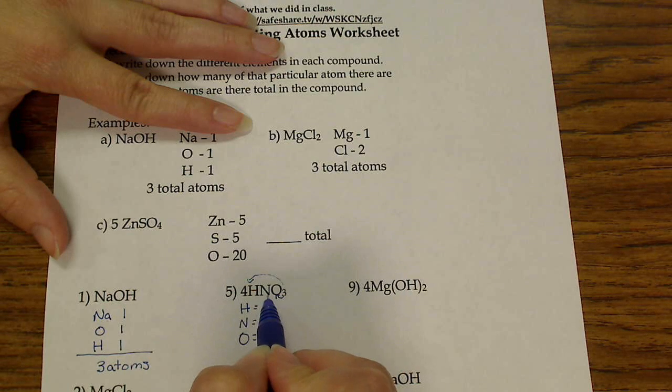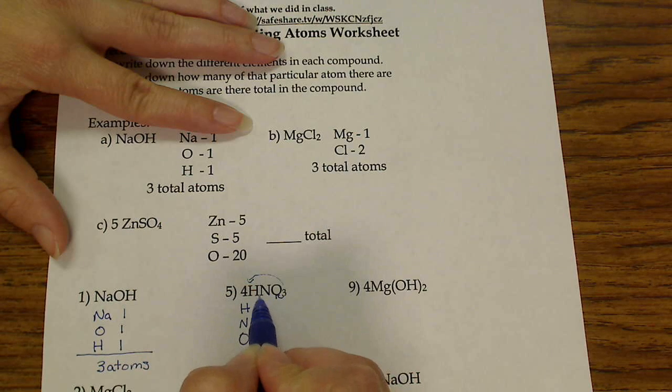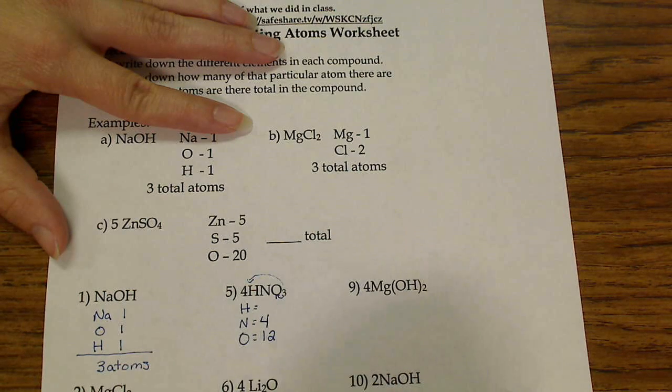Nitrogen has no subscript, but there's a four in front. So it's four times one, because if I have an element here, then there at least is one. So four times one is four nitrogens.